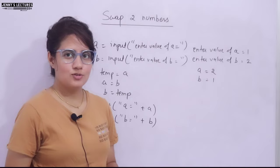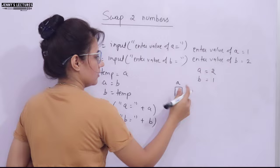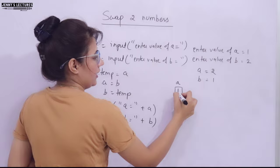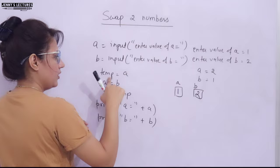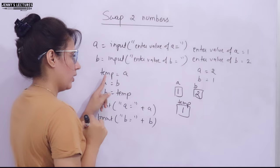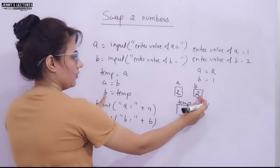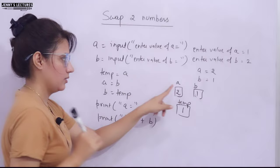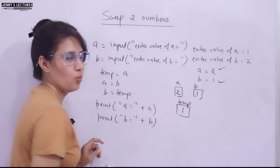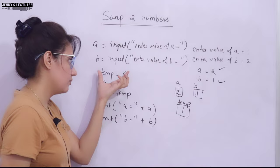Let me explain step by step. When we run the program, a variable a is created in memory and the value 1 is stored. Variable b is created and value 2 is stored. We then create temp — a third container — and assign a's value (1) to temp. Then we assign b's value (2) to a, so a becomes 2. Then we assign temp's value (1) to b, so b becomes 1. Now when we print, a is 2 and b is 1 — the swap is complete. This works because these are variables, not constants, so their values can be changed.